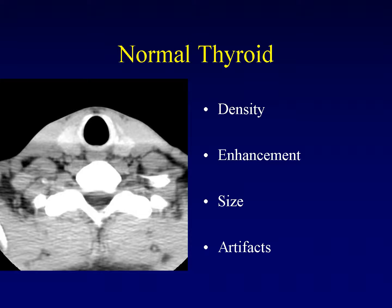The normal thyroid gland is substantially more dense than the surrounding soft tissue. On an unenhanced scan, it will usually be the densest of the soft tissues. This is because the thyroid gland is responsible for concentrating iodine, and as we know from iodinated contrast, iodine is very good at attenuating the energies of photons that we use in CT.